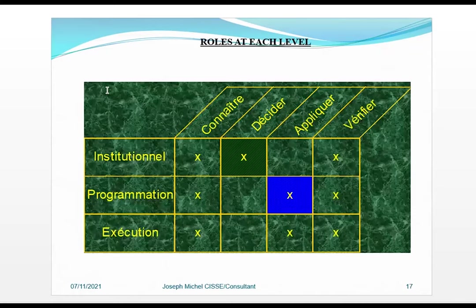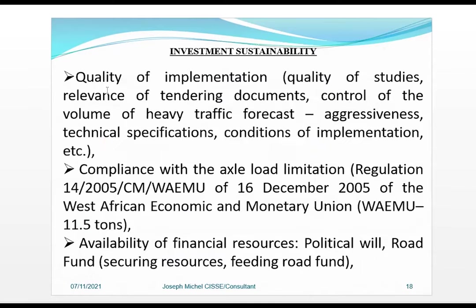Rules at each level. The table covers institution, programming, and execution. Key factors include: investment sustainability, quality of implementation — that is, quality of studies, relevance of tendering documents — control of traffic volume forecasts, aggressiveness, technical specifications, and conditions of implementation.